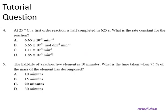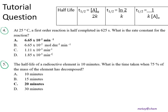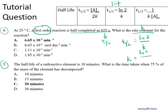After knowing the different formulas for half-life, let's look at tutorial questions 4 and 5. First, list down the half-life formulas for zero, first, and second order. At 25°C, a first-order reaction is half-completed in 625 seconds — so 625 seconds is the half-life. We need to find the rate constant K. Using the first-order half-life formula: t½ = ln2 / K, rearranging gives K = ln2 / t½. By pressing the calculator, you can get the answer.